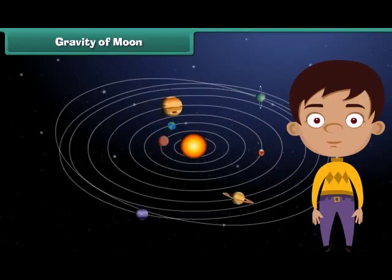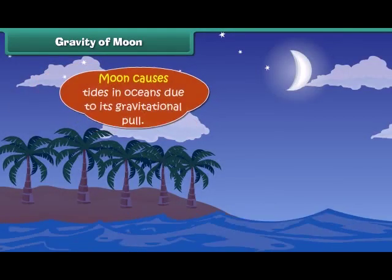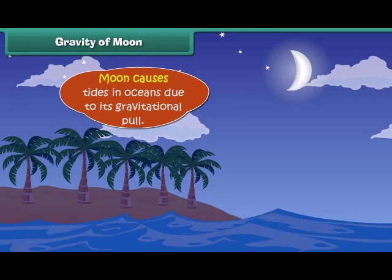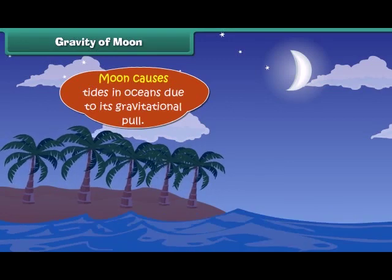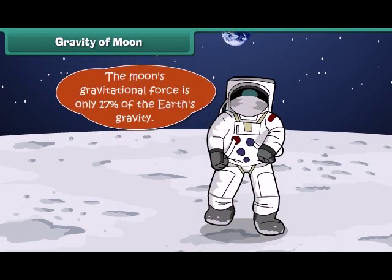You can find big moons in our solar system, but our moon is the biggest compared to the size of earth. It is large enough to cause tides in oceans due to its gravitational pull. You'll be surprised again to know that moon's gravitational force is only 17 percent of the earth's gravity. For example, a hundred pound (45 kg) person would weigh only 17 pounds, that is 7.6 kilogram on the moon.